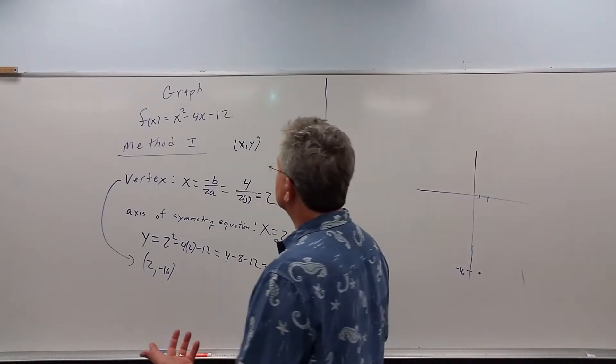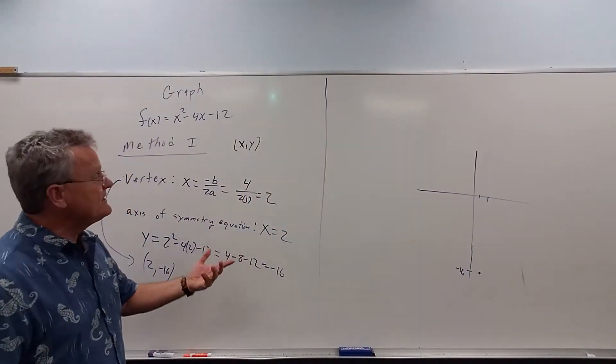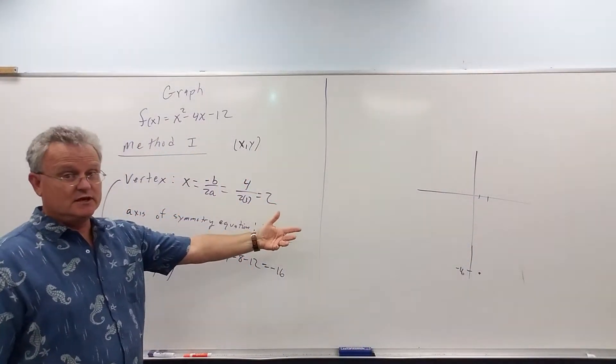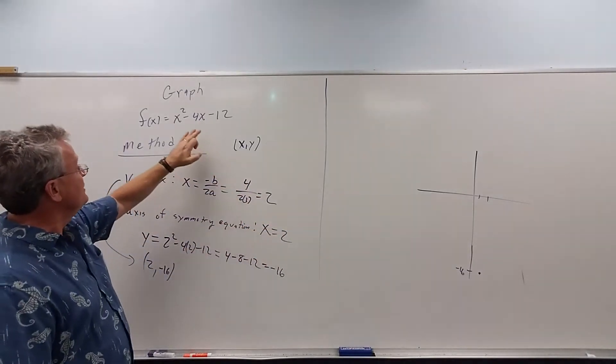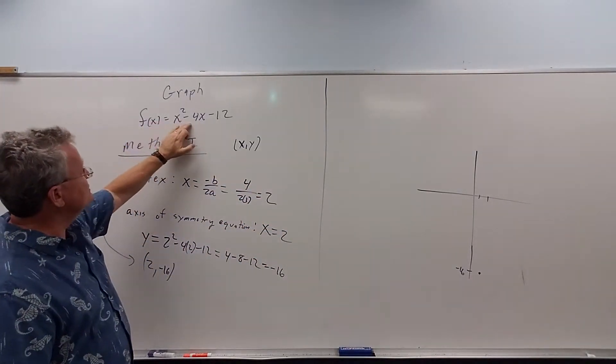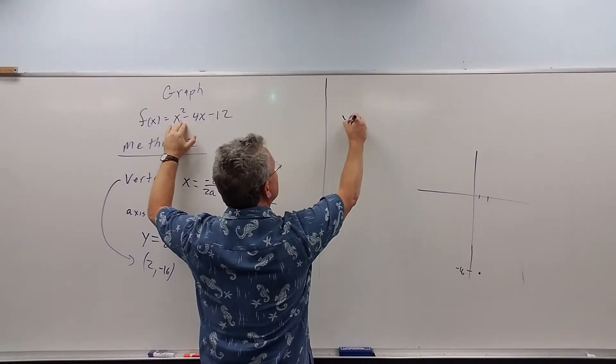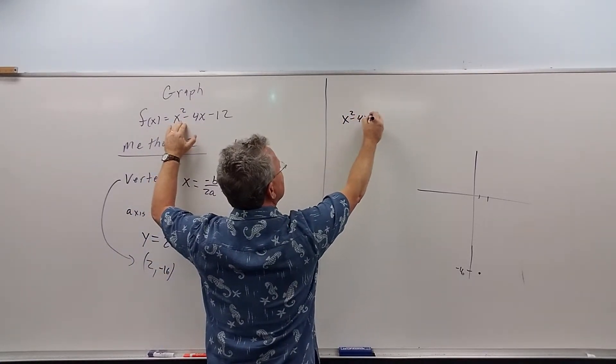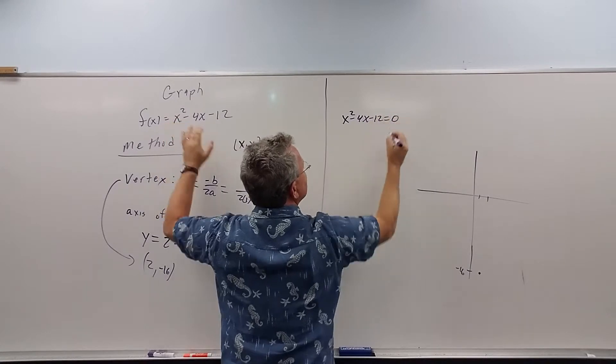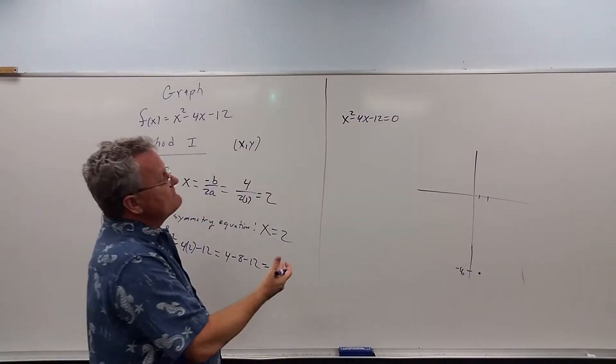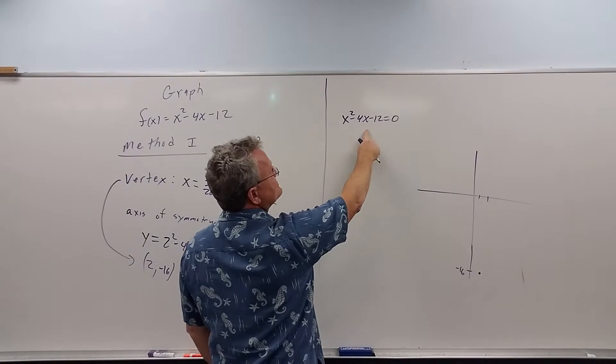Well, those are the x-intercepts. Remember to find x-intercepts, as I explained in the previous video, we let y equal 0. So I take x squared minus 4x minus 12, and I set that equal to 0. So to solve this, well, this factors,